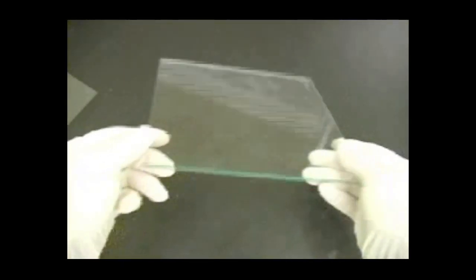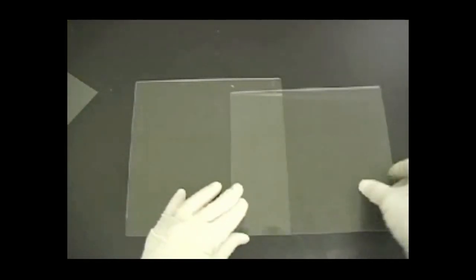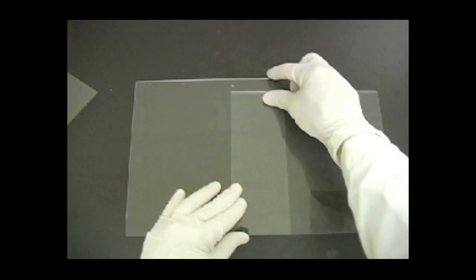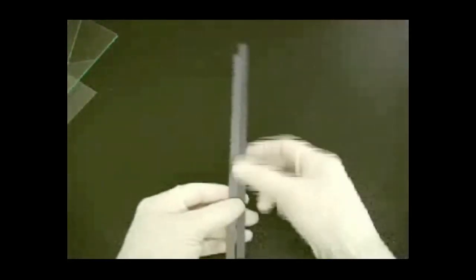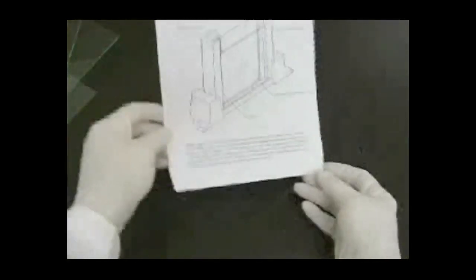You'll need 20 centimeter by 22.3 centimeter tall glass plates, 20 centimeter by 20 centimeter short glass plates, narrow spacers, and Protein II XL alignment cards.